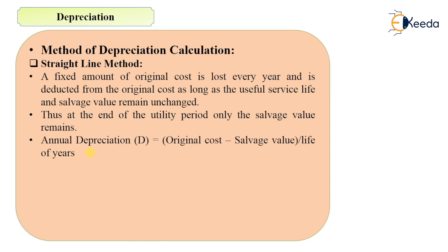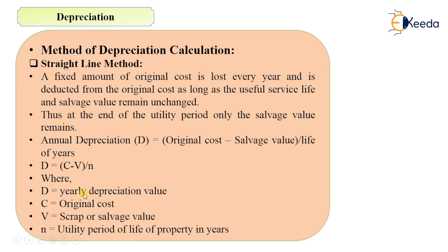The formula for calculation of annual depreciation by the straight line method is: original cost minus salvage value, divided by the life of the structure in years. In short, D = (C - V) / N, where D is the annual depreciation value, C is the original cost, V is the scrap or salvage value, and N is the number of years of life of the structure.